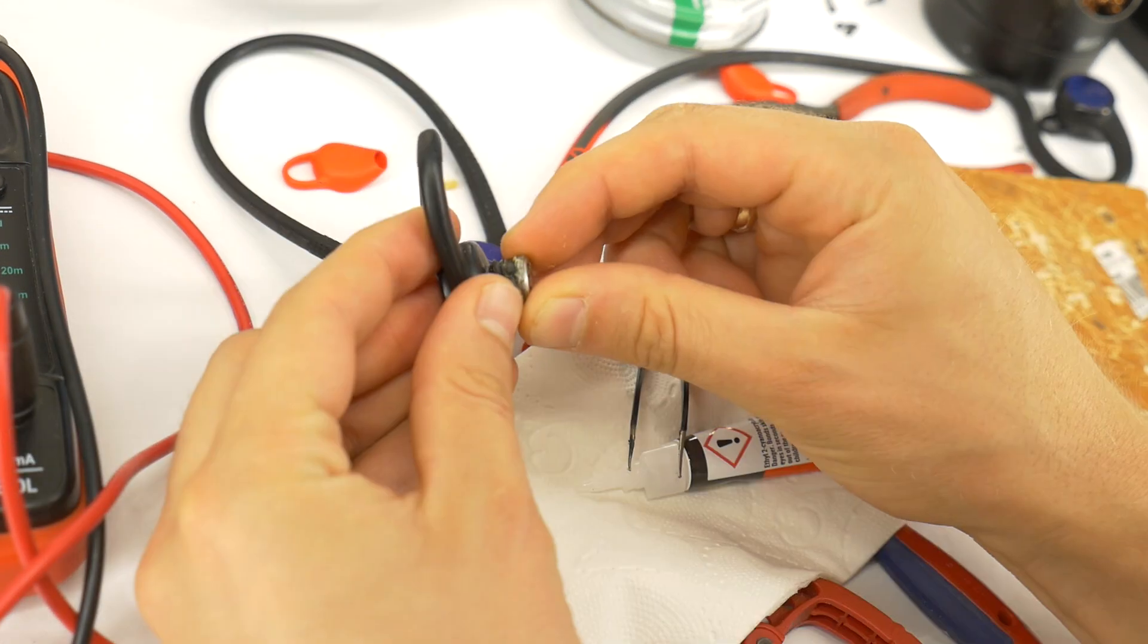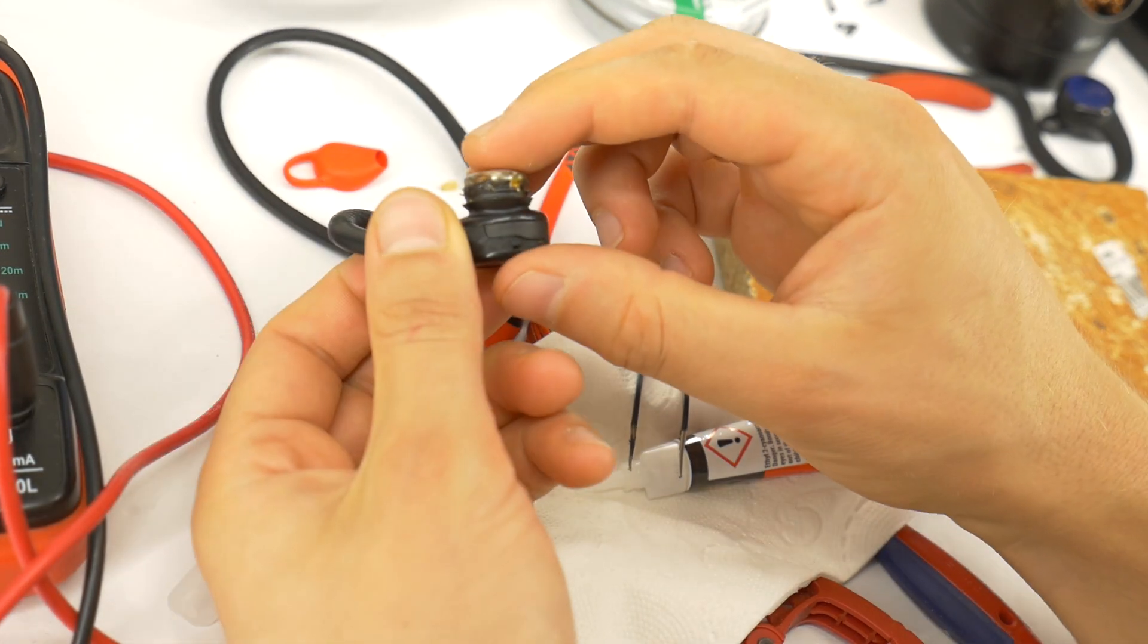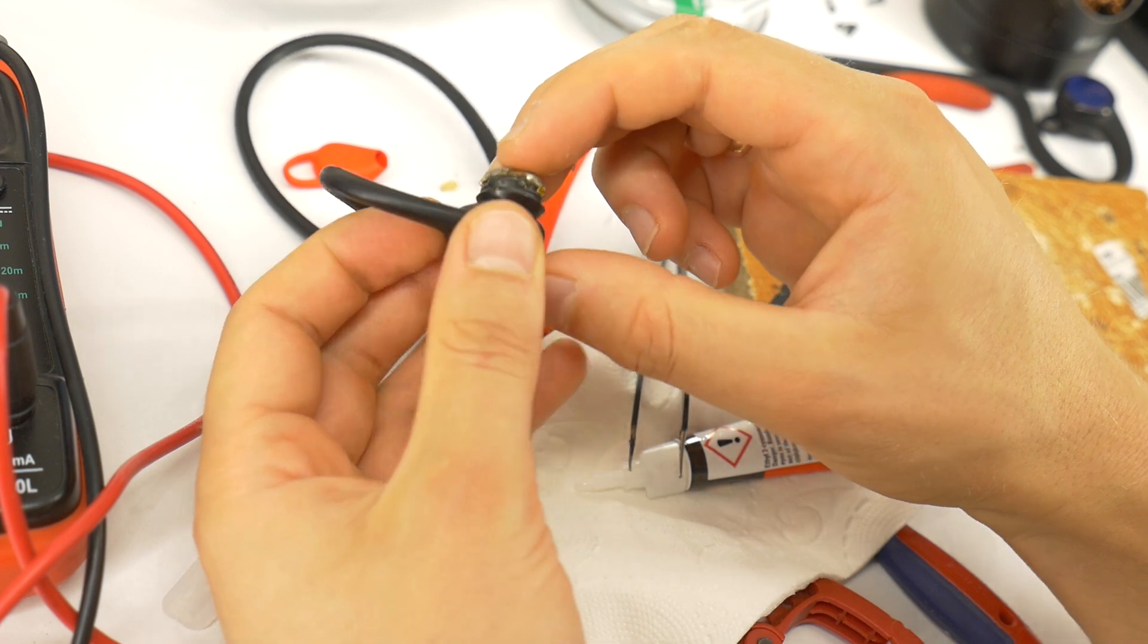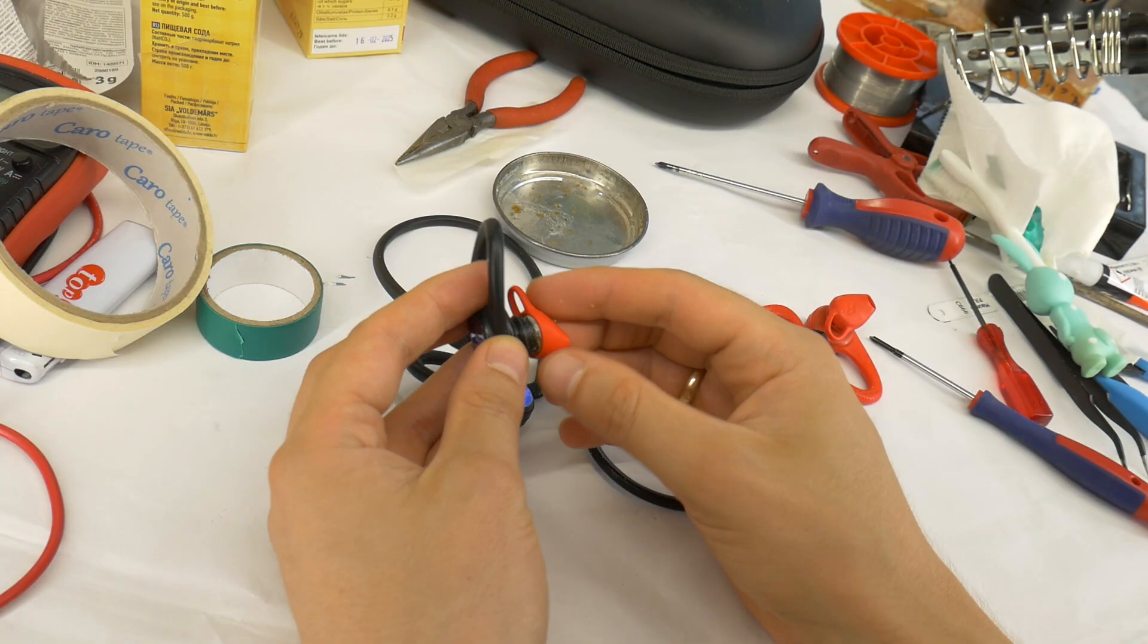Once done, use glue to reassemble the housing. Now you have a repaired and fully functional pair of headphones using two broken ones.